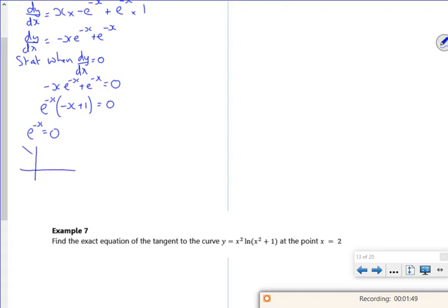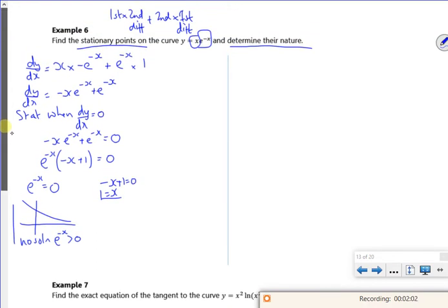So remember the graph of e to the minus x has an asymptote, so that's got no solution, because e to the minus x is greater than 0. And then I've got minus x plus 1, so I've got 1 for x. So that's where my stationary point is.